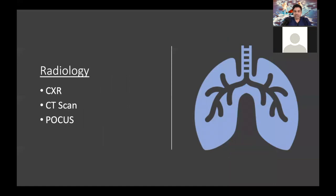Regarding radiology, chest X-ray is not sensitive for diagnosing COVID-19. CT scan shows non-specific findings such as ground-glass opacities in bilateral lungs — it is sensitive but not diagnostic for COVID-19. Some places, especially in China, included CT scan as a screening tool, but this is not supported by much literature. Point-of-care ultrasound also has good sensitivity but is operator-dependent. Signs on ultrasound include increased B-lines, pleural thickening, sometimes pleural effusion, and consolidation.